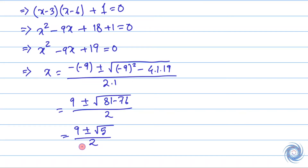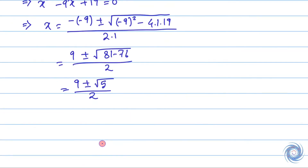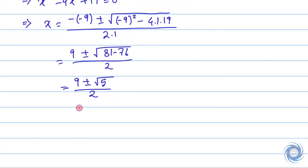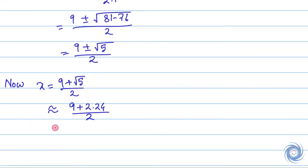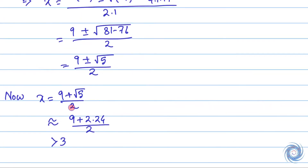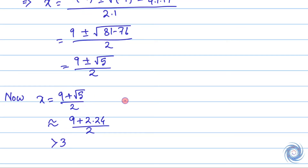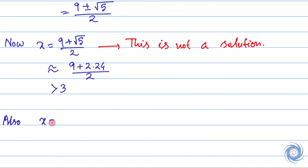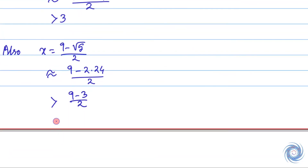Finally we have x = (9 ± √5) / 2. Let us take x = (9 + √5) / 2. This is obviously greater than 3, and therefore x does not lie in the closed interval [2, 3], so x is not a solution. Now let us take x = (9 - √5) / 2. Finally x is greater than 3, therefore x = (9 - √5) / 2 is not a solution either.